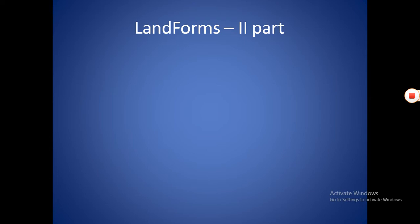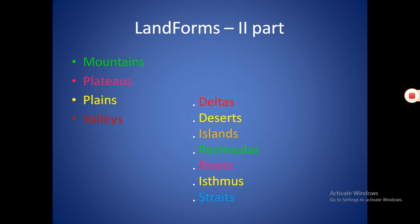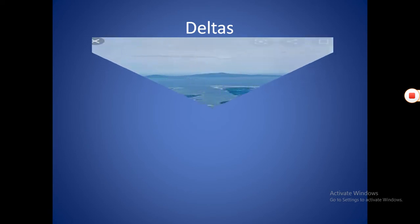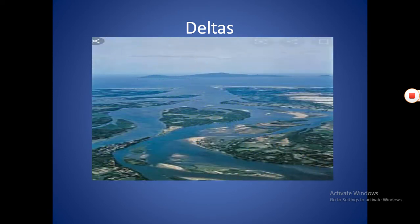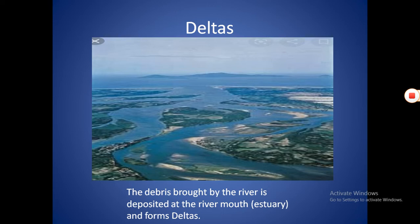In the last class you learned four kinds of landforms: mountains, plateaus, plains, and valleys. In this second part, we will discuss deltas, deserts, islands, peninsulas, rivers, isthmus, and straits.